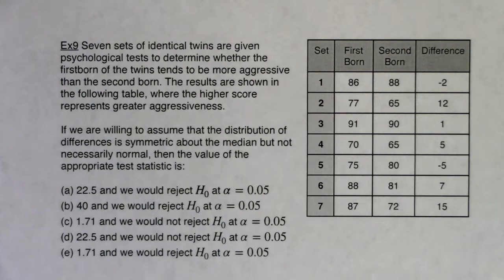Okay guys, let's take a look at these two multiple choice questions. We have seven sets of identical twins given psychological tests to determine whether the firstborn of the twins tends to be more aggressive than the secondborn. The results are shown in the following table where the higher score represents greater aggressiveness. If we are willing to assume that the distribution of differences is symmetric about the median, but not necessarily normal, then the value of the appropriate test statistic is: